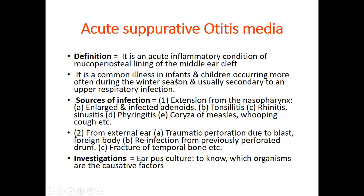During winter, the chances of getting rhinitis, sinusitis, and pharyngitis are common because of the cold. Kapha prakopa will be there and the upper respiratory tract will be affected, with running nose and sneezing. That particular infection goes inside and blocks the Eustachian tube. ASOM is usually secondary to an upper respiratory tract infection.